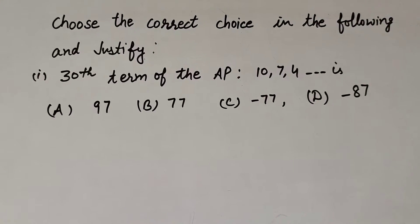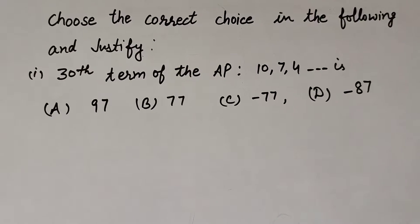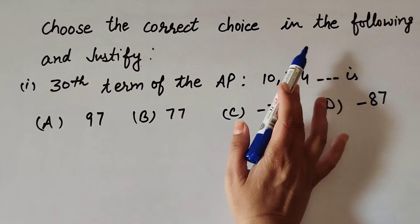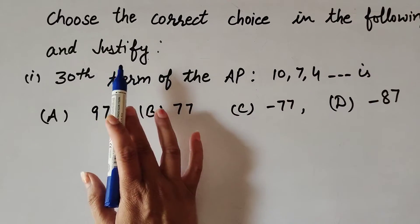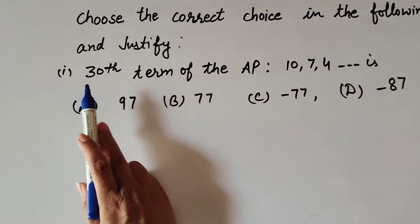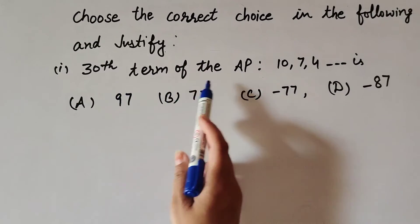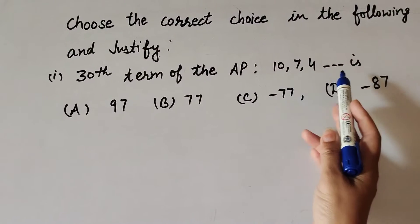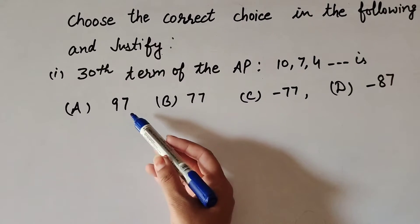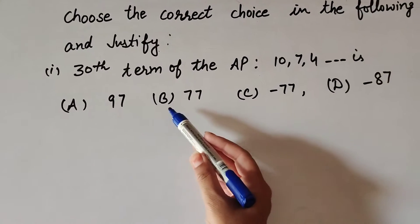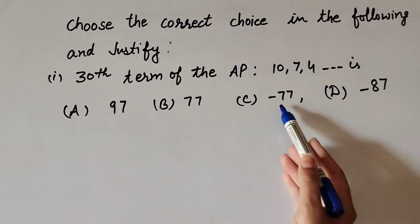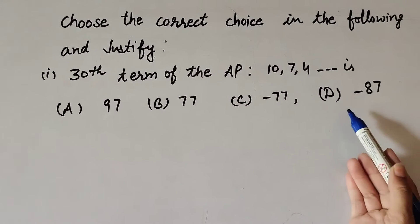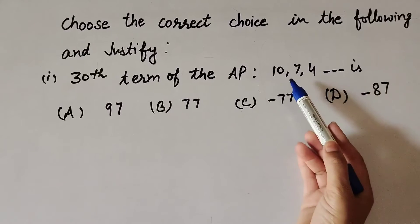Hello friends, welcome to my channel. In this video we discuss: choose the correct choice in the following and justify. In the first part: the 30th term of the AP 10, 7, 4, and so on is — option A: 97, option B: 77, option C: minus 77, option D: minus 87.